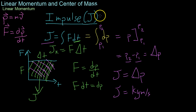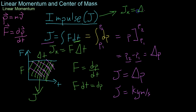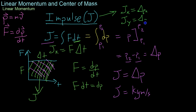Just as we can with forces, accelerations, or momentum, you can break up impulse into two-dimensional components. For example, the x-impulse is the change in momentum in the x-direction, the y-impulse is the change in momentum in the y-direction, and so on for however many dimensions you're looking at.